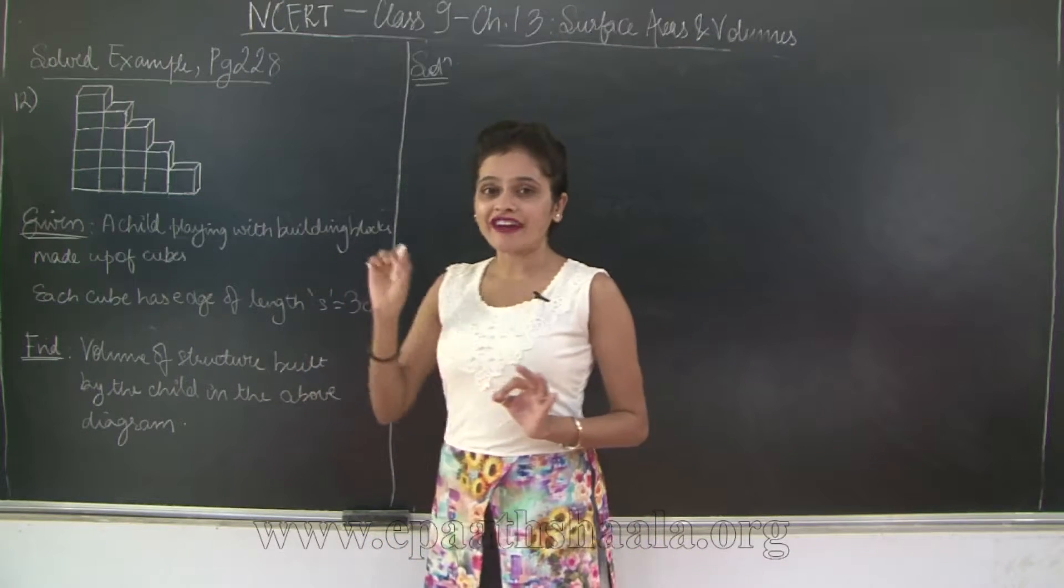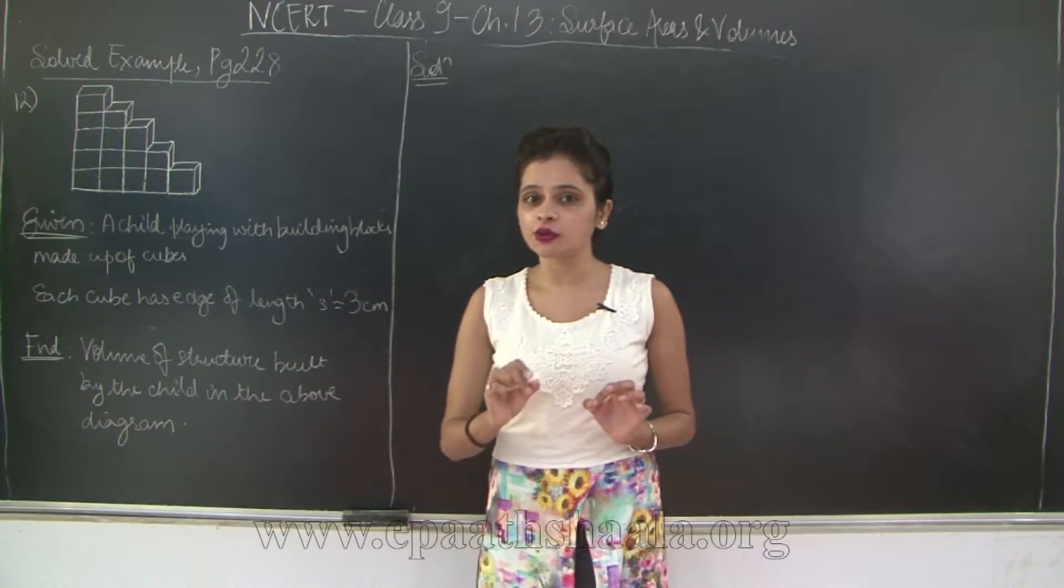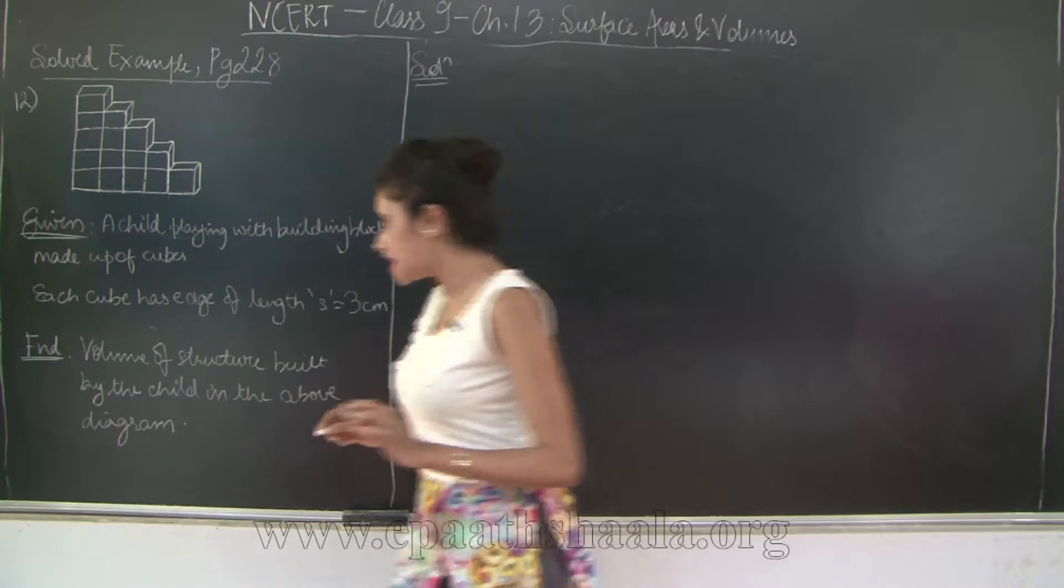You need to find the volume of this structure built by the child in the above diagram. So, how do you find the volume of this entire structure? We will first find the volume of one single unit and what is one single unit out here? One single unit is a cube. So, let's see how many such units are there. Let's count.